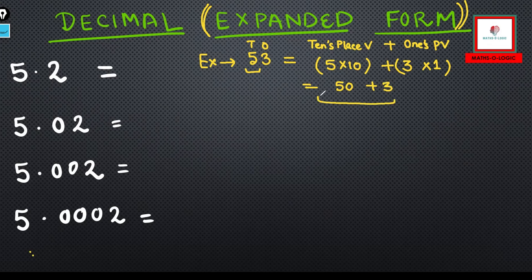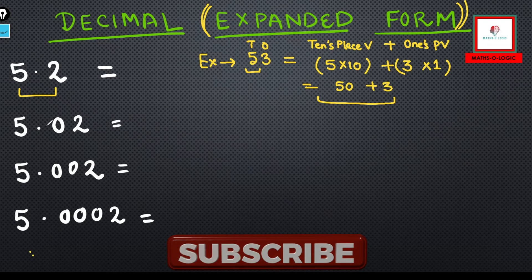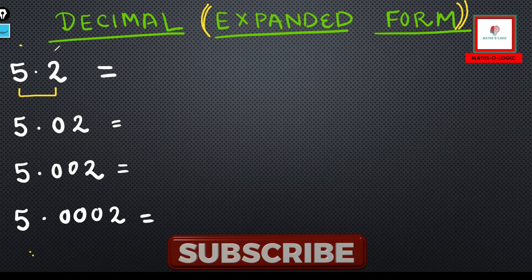But if I have these decimal numbers, I'm going to write with a similar technique. Let's see how. This is the tenth and this is ones. If you write initially, it will help you. So this is five ones and two tenths.